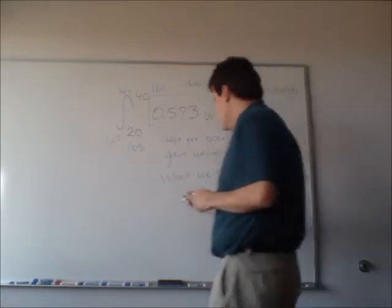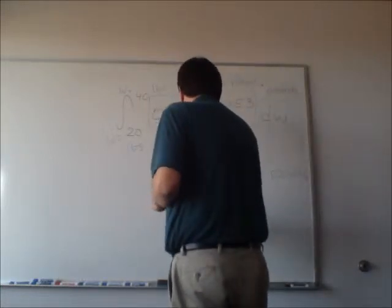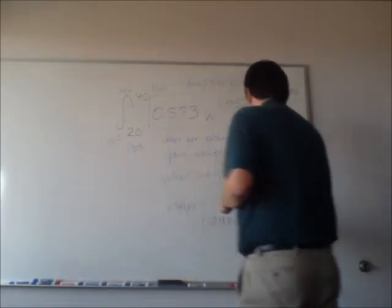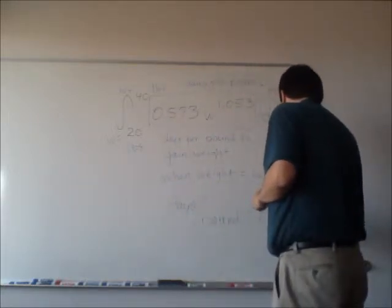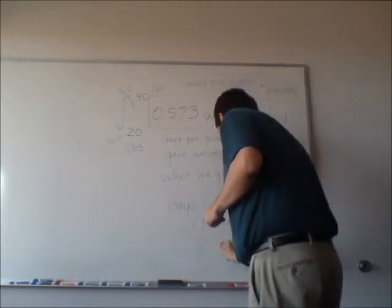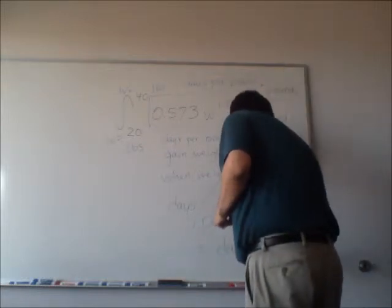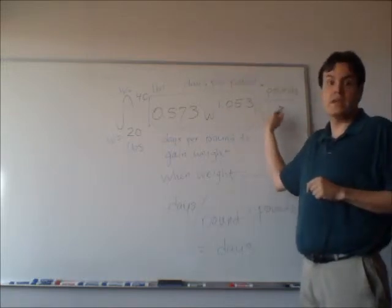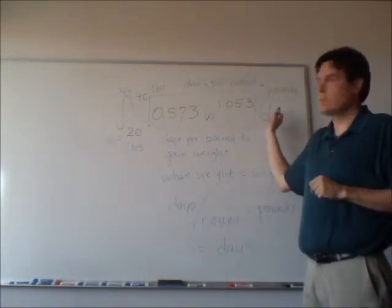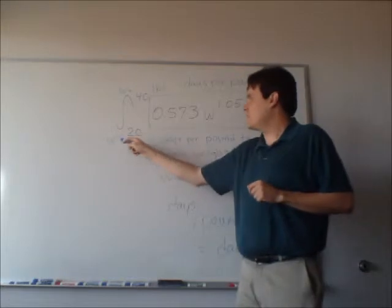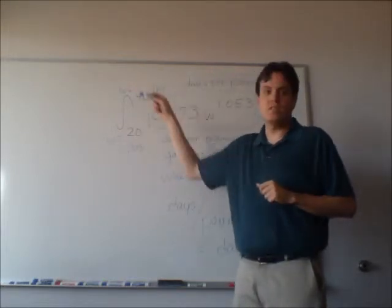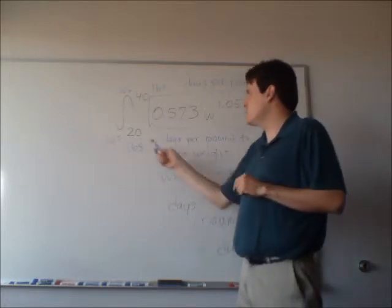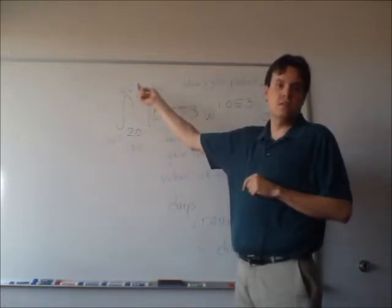So what I'm getting for my units are days per pound times pounds. So the units of the answer are going to be days. So this is telling me how long it takes for Frankie to gain dW pounds. And we have W going from 20 to 40. So what this integral is telling me is the number of days altogether that it takes for Frankie's weight to go from 20 pounds to 40 pounds.